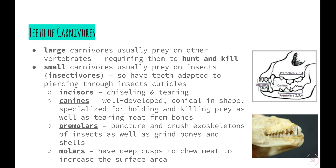Lastly, the molars have very deep cusps in order to chew meat and increase the surface area. When eating meat, you use your front teeth to break it up and then the back teeth to chew it and increase the surface area. So from this video we've seen how different types of animals have different teeth depending on their diet, and how the overall job of those teeth is to increase the surface area of food so that when it passes into the digestive system, it can be broken down much more easily by the enzymes and acids found in the stomach — which we'll look at in our next video.